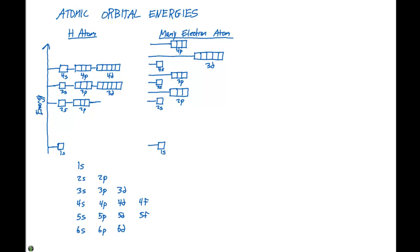One on the left of a hydrogen atom which has only one electron, and one on the right which is a many electron system which is going to happen for all the other atoms that we're going to discuss.